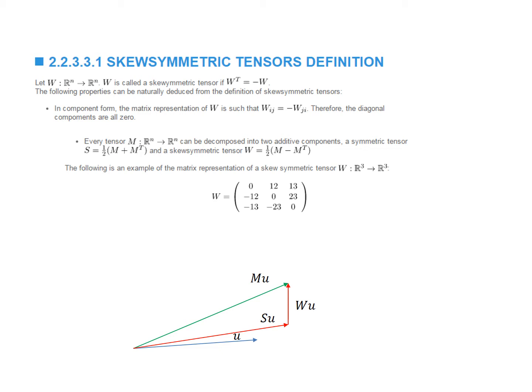Su provides information about the extension action of M, while Wu provides information about the rotation caused by M. As you can see, Wu is perpendicular to u — it shows how the vector is rotated, while Su provides information about the extension. W is equal to half of M minus the transpose of M, while S is equal to half of M plus the transpose of M.